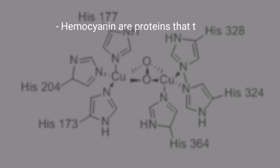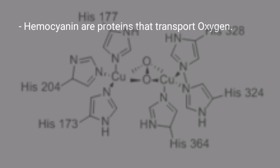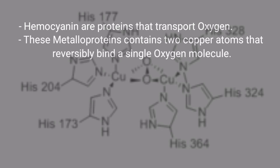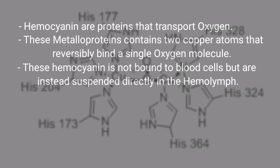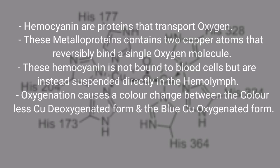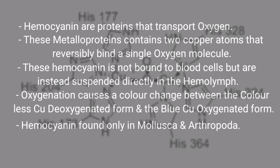The second respiratory pigment is hemocyanin. Hemocyanins are proteins that transport oxygen. These metalloproteins contain two copper atoms that reversibly bind a single oxygen molecule. Hemocyanin is not bound to blood cells but is instead suspended directly in the hemolymph. Oxygenation causes a color change between the colorless deoxygenated form and the blue oxygenated form. Hemocyanin is found only in molluscs and arthropods.